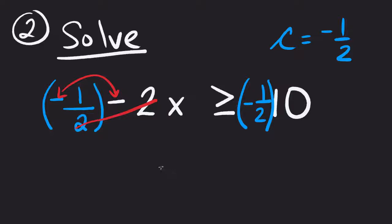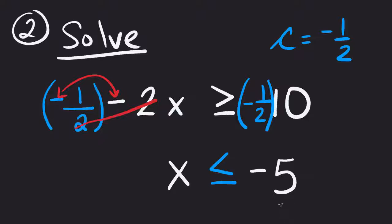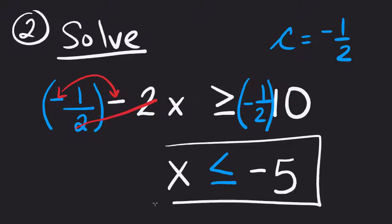Multiplying by negative one-half, those terms reduce and leave just x. Because we multiplied by a number less than zero, the inequality changes as well. On the other side, ten divided by two is five, and the negative sign comes around, giving negative five. The final answer is x is less than or equal to negative five. Every sign in the problem changed value.